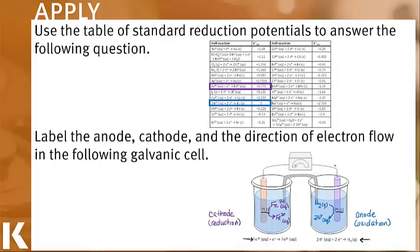Now that we have determined the anode and the cathode, we can determine the direction that our electrons will flow. Since electrons always flow alphabetically from anode to cathode, our electrons will flow from the right side of this galvanic cell to the left side of this galvanic cell. Identification of the anode and the cathode will always help us determine the direction that electrons are flowing, since they always flow alphabetically.